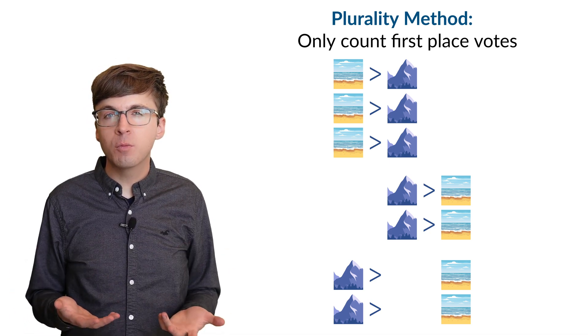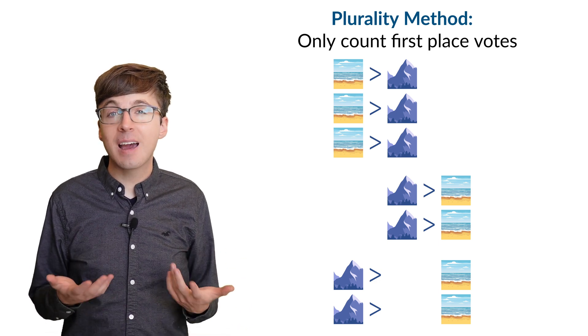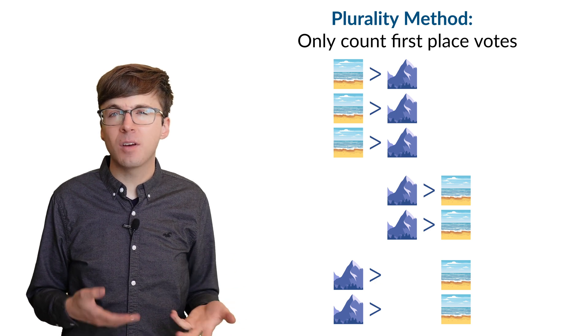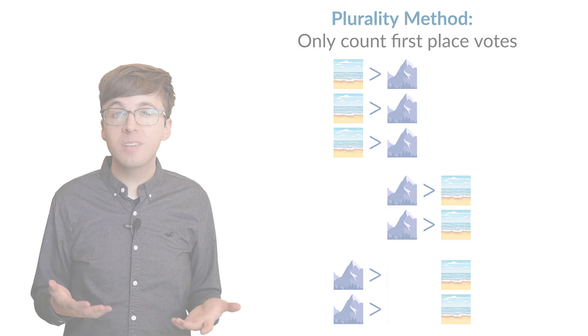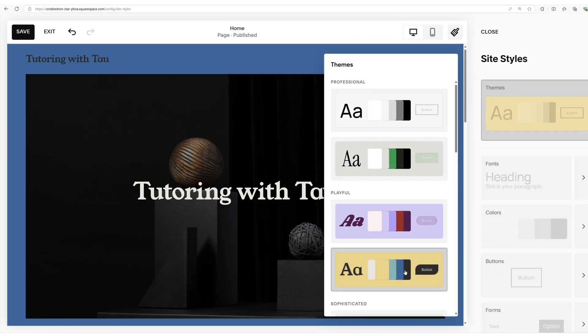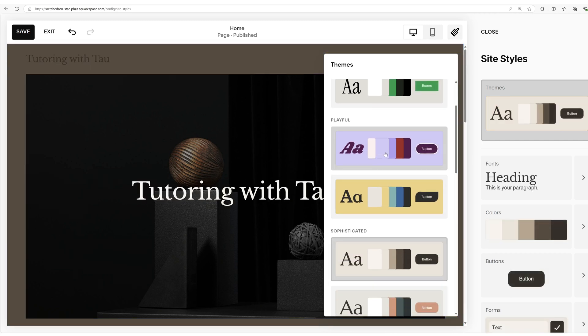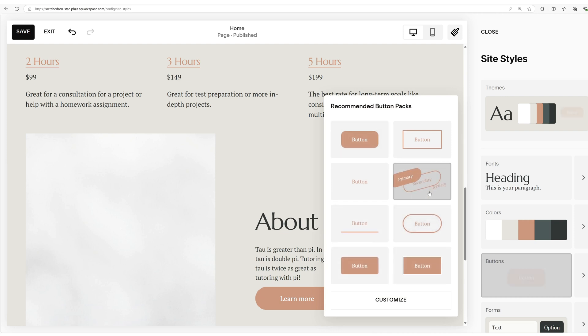Just like Arrow's theorem reveals hidden complexities in decision making, building a website has its hidden challenges. Handling databases, optimizing performance, it can get overwhelming. But with Squarespace, you don't need to worry about any of that. Squarespace combines decades of design experience with powerful new AI tools in their design intelligence, so anyone can build a beautiful, responsive, custom website fast.